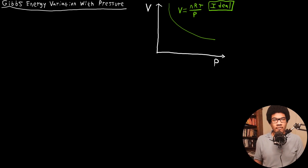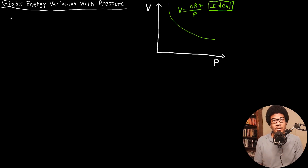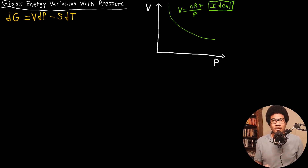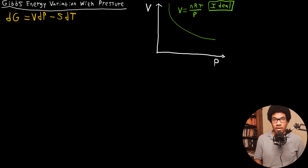In this video we're going to look at the variation of the Gibbs free energy with respect to changes in pressure. We know from the differential of the Gibbs free energy that there is an explicit pressure dependence, so we know that dG is equal to VdP minus SdT. This is the expression of the Gibbs free energy with respect to its natural variables — temperature and pressure — so there is this pressure dependence since the differential depends on dP.